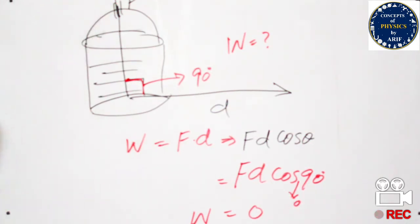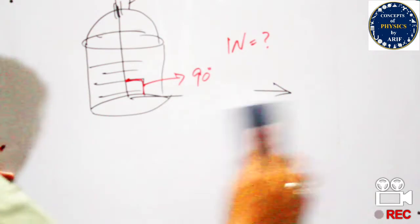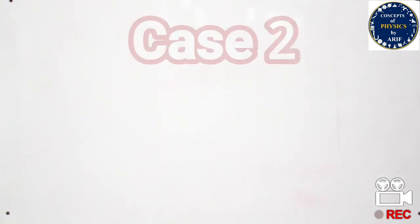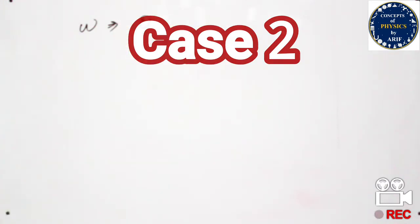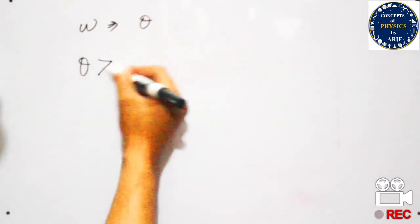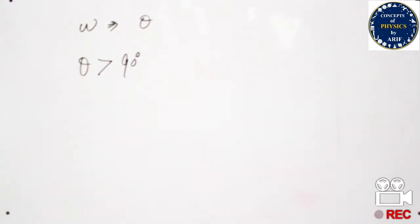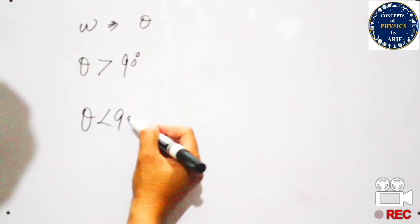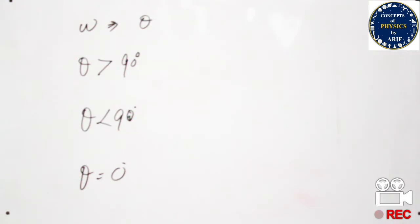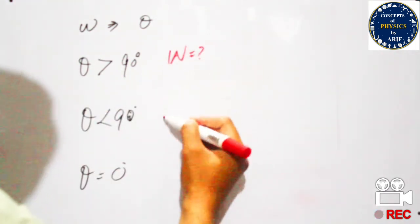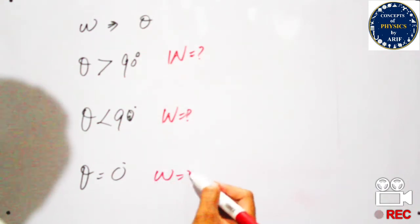So W = F D cos 90 degrees. Since cos 90 = 0, and zero multiplied by anything is zero, no work is done in this case. Now we need to understand what positive and negative work done are. The work done depends upon theta, the angle between force and displacement.